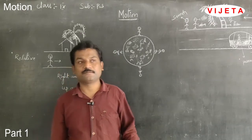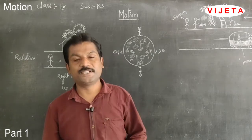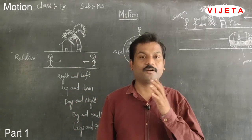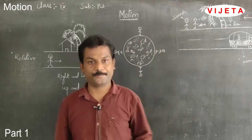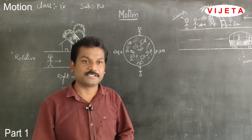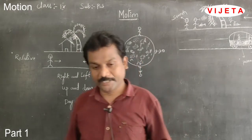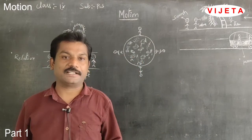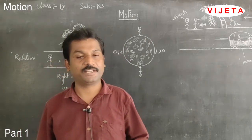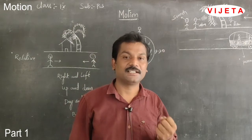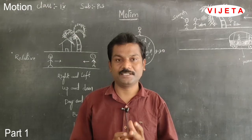Hi students, in the previous class we discussed the syllabus of ninth standard. There are 12 units in physical science — 8 in physics and 4 in chemistry. Today we are going to discuss our first chapter, which is called motion. The fastest scientist who studied the motion of objects was Galileo, who studied balls dropped from an inclined plane.